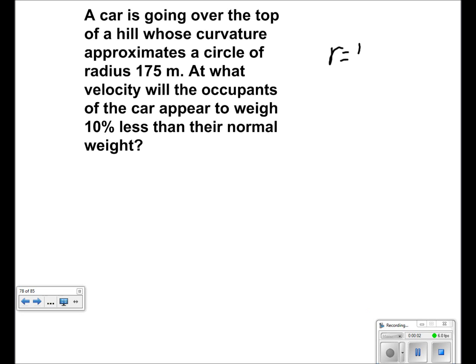A car is going over the top of a hill whose radius is 175 meters. We're looking for the velocity. It is also given that the people in the car weigh 10% less than their normal weight.